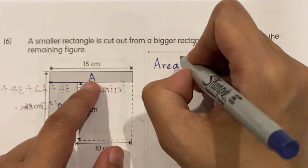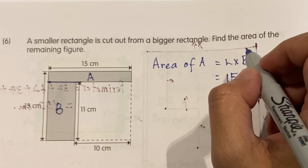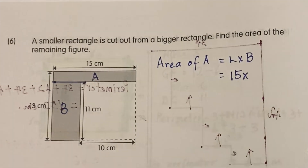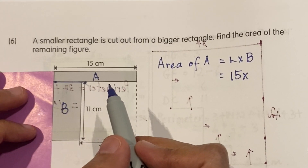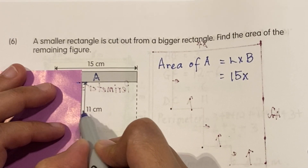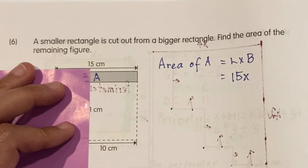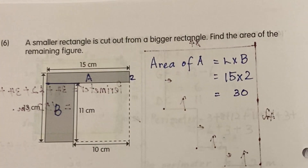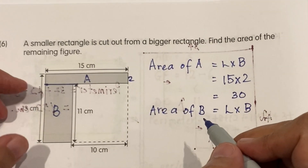Let's find area of A — that's length times breadth. My length is 15 times the breadth, which is this small line. This whole length from here to here is 13. I push in — that's 11. So 13 minus 11 gives 2, because this part is 11, so this is 2. That's 15 times 2, which is 30. Area of B: length times breadth, my length is 11.